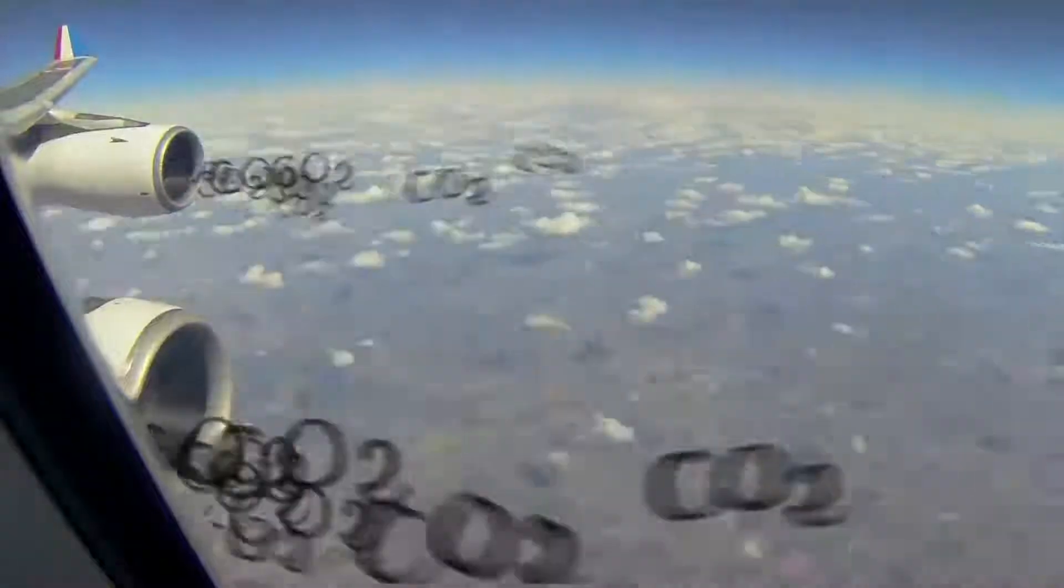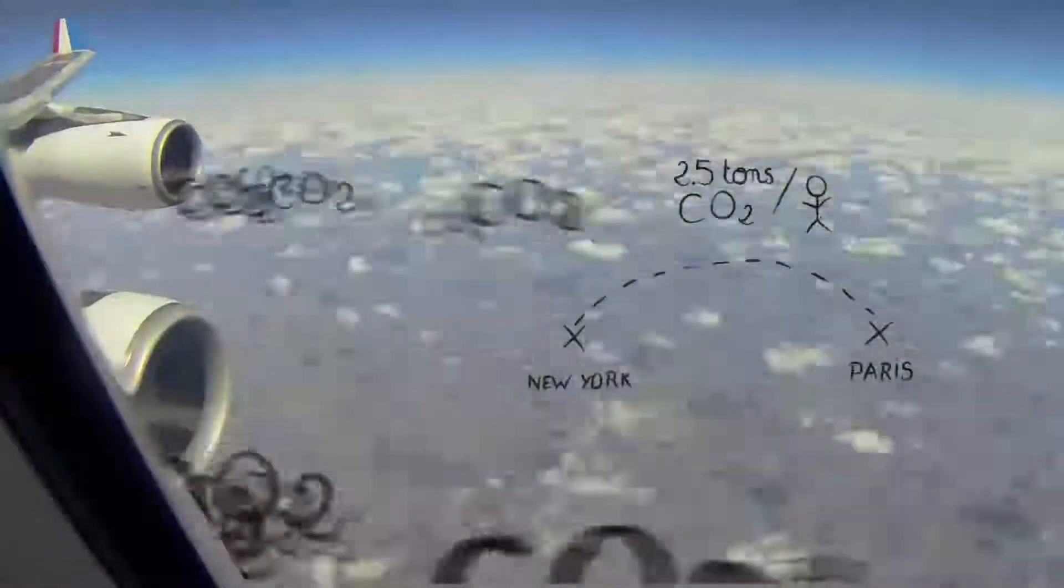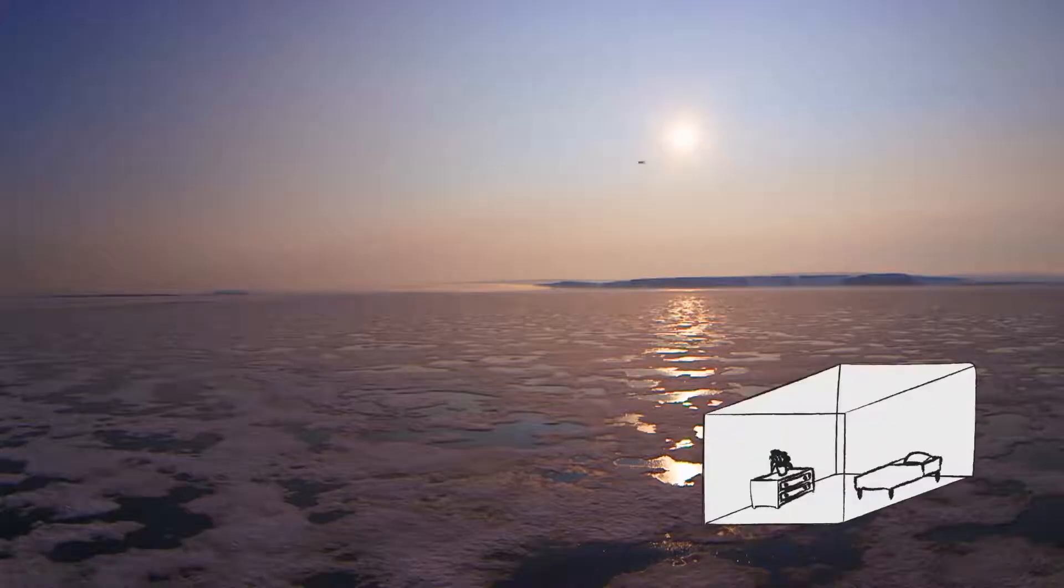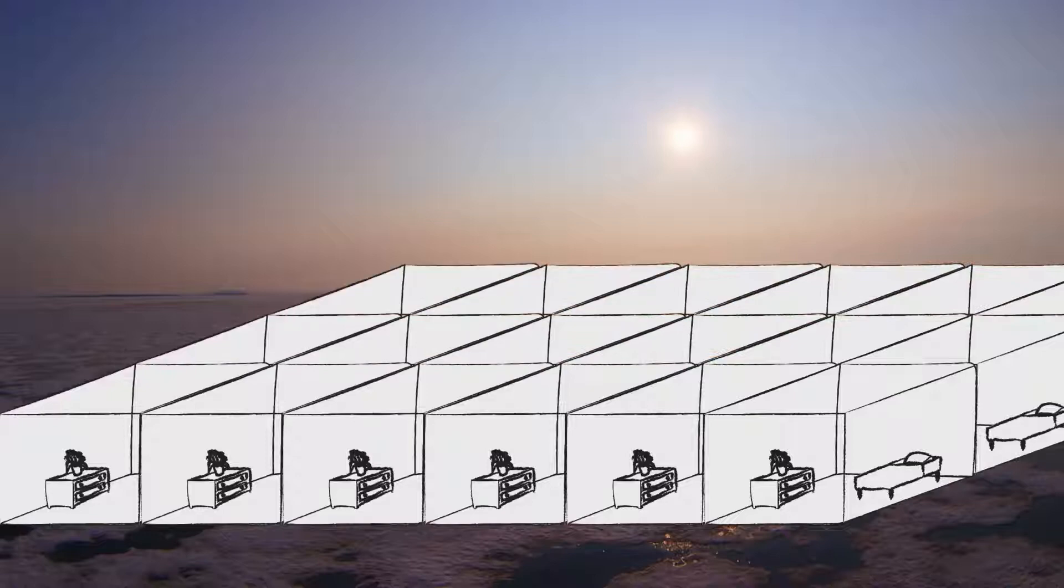For example, taking a plane from Paris to New York makes about 2.5 tons of CO2 in the atmosphere, which means about a small room of sea ice that we are losing for each passenger.